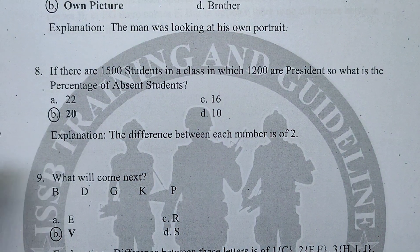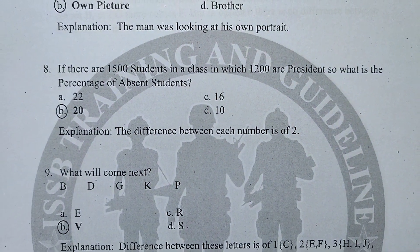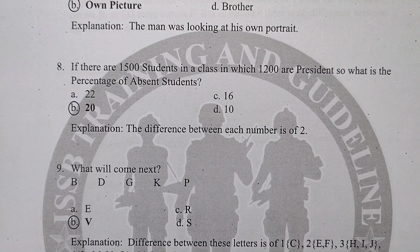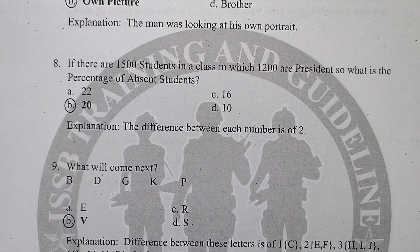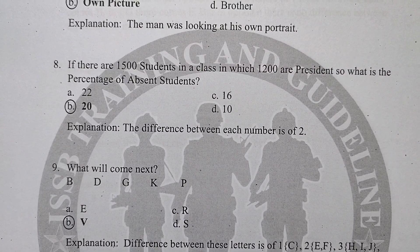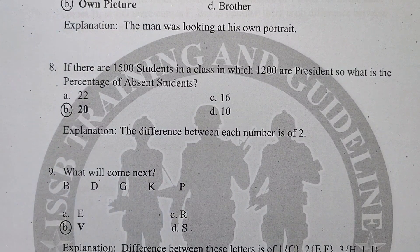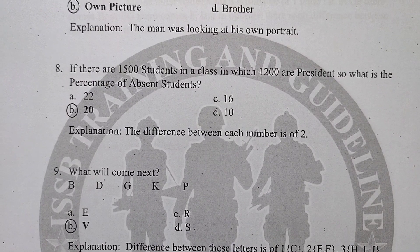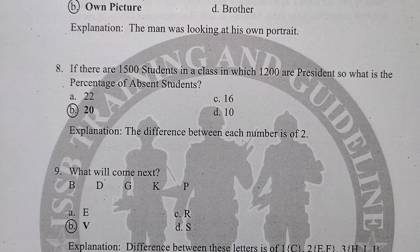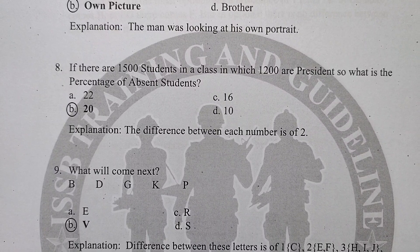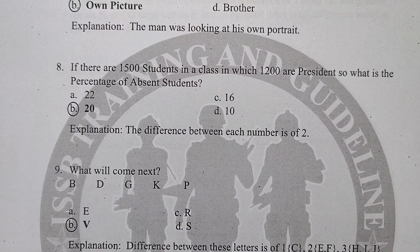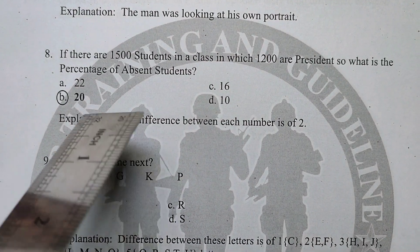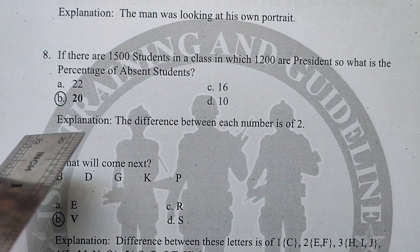Question number 8: if there are 1500 students in a class and 1200 are present, what is the percentage of absent students? Total students are 1500, present are 1200, so absent are 300. The percentage of absent students will be 20%. My academic book covers more percentage questions in detail — I have also shared a separate video about it.